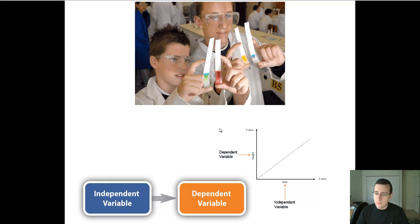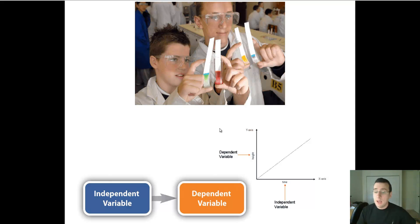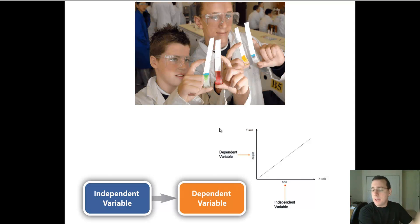In a controlled experiment, only the independent variable is going to be changing. The other things will stay the same, and we call those things constants. When you do this, you can tell for sure that it was the independent variable that made the dependent variable change, because you controlled everything else. One thing changes, and that makes something happen, so you can say that's why that happened — because of that change.